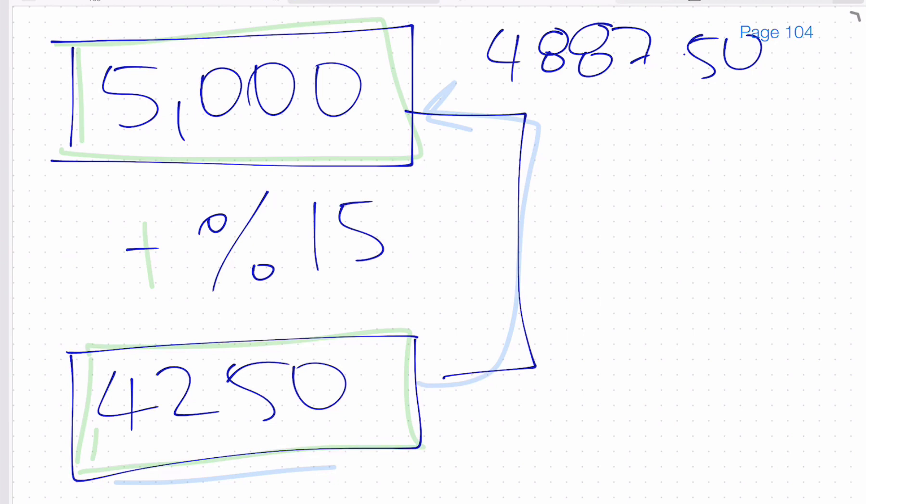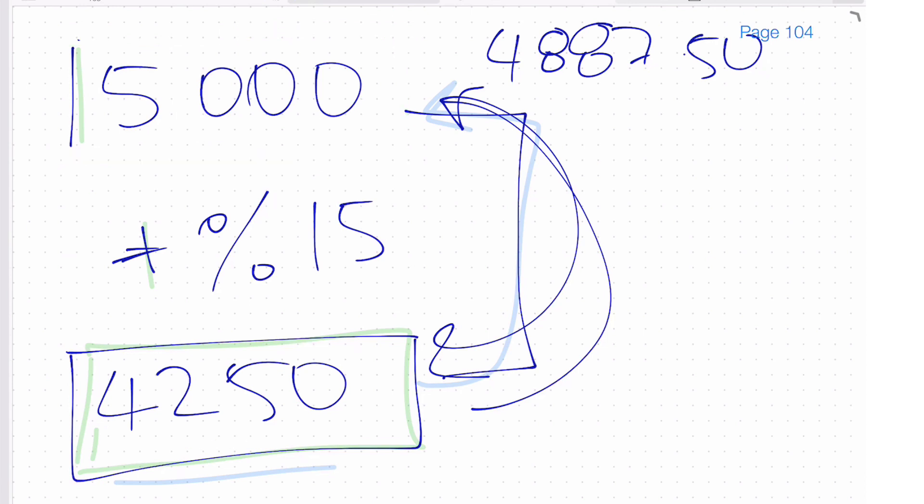Whoa, hang on, what happened then? We took 15% off, we went to here, you add 15% back on, you'd expect just to go back to there, back to the $5,000. But when we add 15%, we're adding it to this number, and the gap is not 15% of this number, it's 15% based on this original number, so 15% of $5,000, not 15% of $4,250.